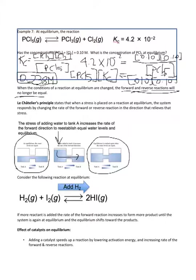It's the same with a chemical reaction. If you have hydrogen gas and iodine gas going back and forth to form 2 HI — at equilibrium the forward and reverse reactions are going at the same speed — but if you add some H2 once it's at equilibrium, the reaction will head towards the products to relieve the stress. If more reactant is added, the rate of the forward reaction increases to form more product until the system is again at equilibrium, and the equilibrium shifts towards the products.